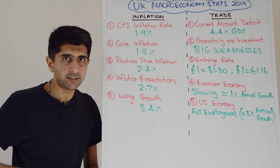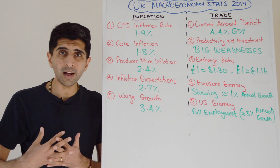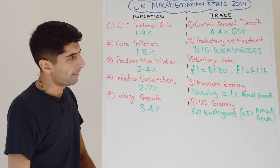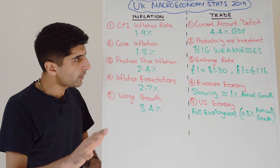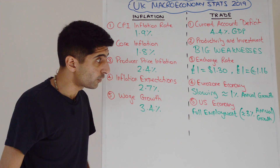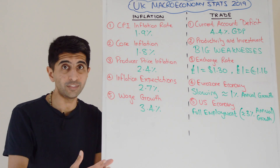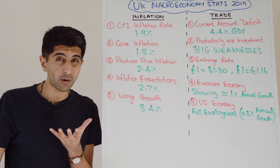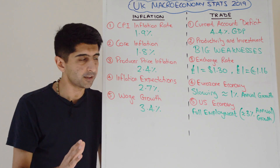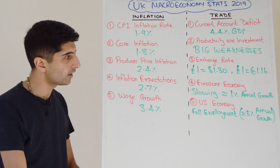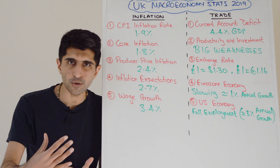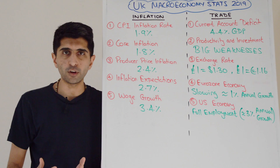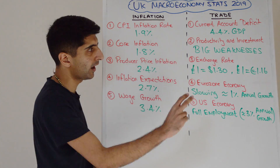It's good to know about the eurozone and US as major trading partners. The eurozone economy is slowing significantly — annual growth there is expected to be only 1% this year, partly due to trade concerns and slowing Chinese growth — bad news for UK export demand. The US economy is doing very well, at full employment with annual growth around 3%. But it's structural supply-side issues, not demand-side factors, that drive the UK's current account deficit and must be addressed.